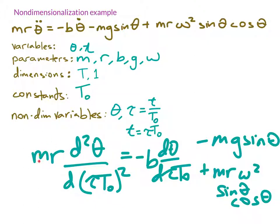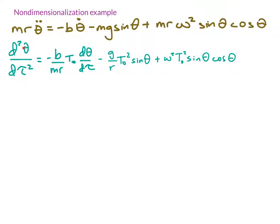I'm going to divide through by MR and multiply through by T₀² so that I have a nondimensional quantity on this side of the equation. After dividing through by MR and multiplying through by T₀², this is the equation that I'm left with.